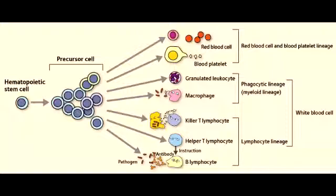Name the white blood cell differential from highest to lowest — basically, name the most common white blood cell by content in the blood. Neutrophils make up 54–62%, lymphocytes 25–33%, monocytes 3–7%, eosinophils 1–3%, and basophils 0–0.75% of all white blood cells in the blood.